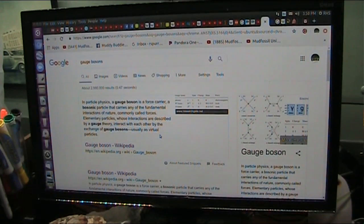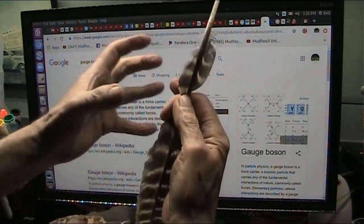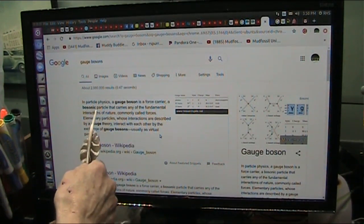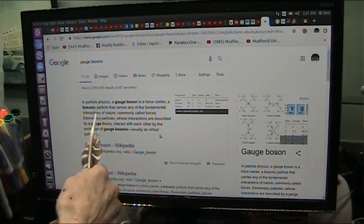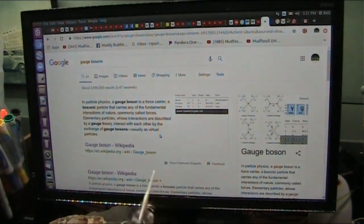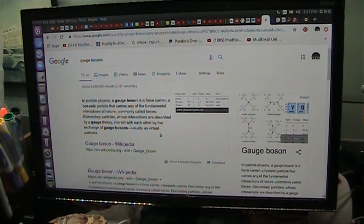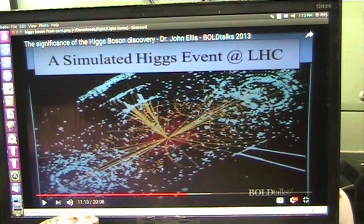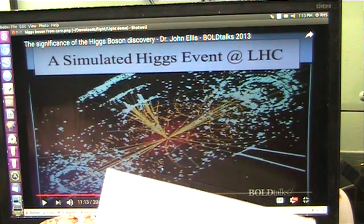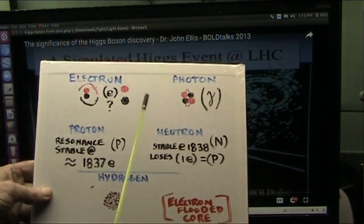Let's just read what a gauge boson is. It is a force carrier. It carries the force along with it. And the force is a bosonic particle that carries any of the fundamental interactions of nature, commonly called forces. So the carrier is what I showed, is that black spot. So my contention right along is all particles have the same charges. They all have the identical same charges, every single particle.